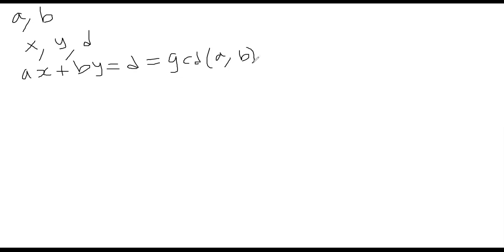So now how do we find these numbers X and Y and D from A and B? We know how to find D from A and B. This is basic Euclidean algorithm. However, we need to also now find X and Y.